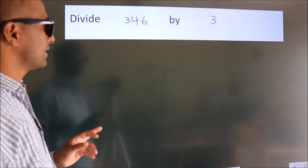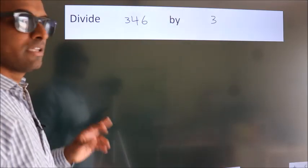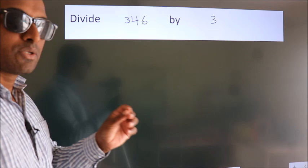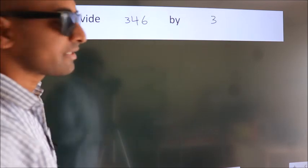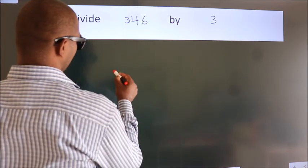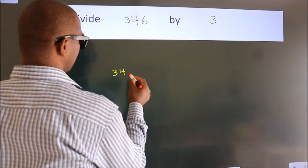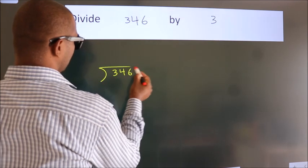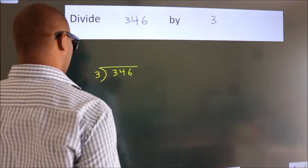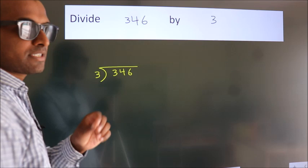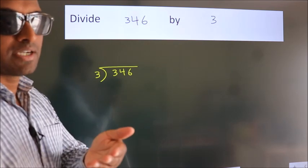Divide 346 by 3. To do this division, we should frame it in this way. 346 here, 3 here. This is your step 1.